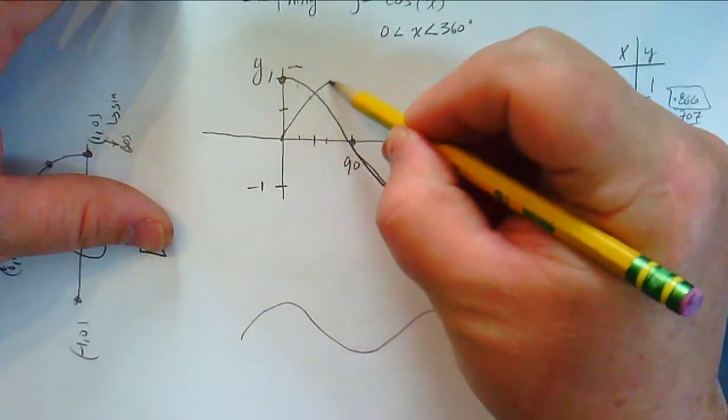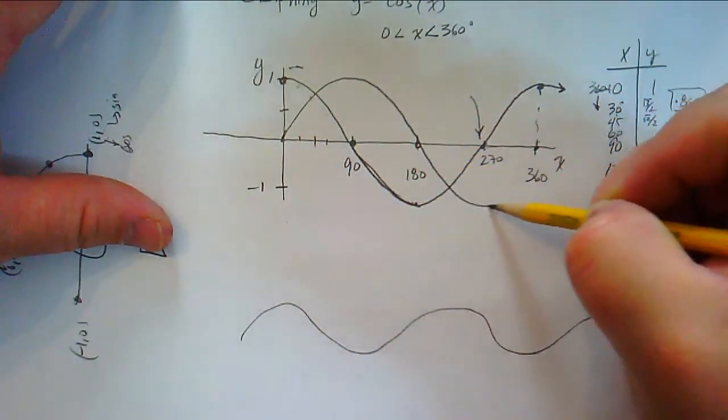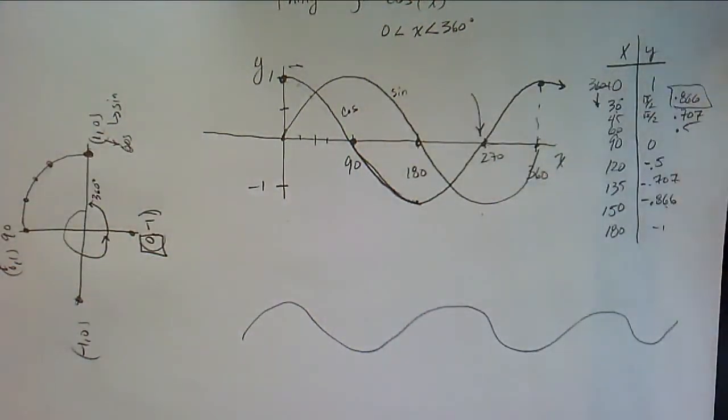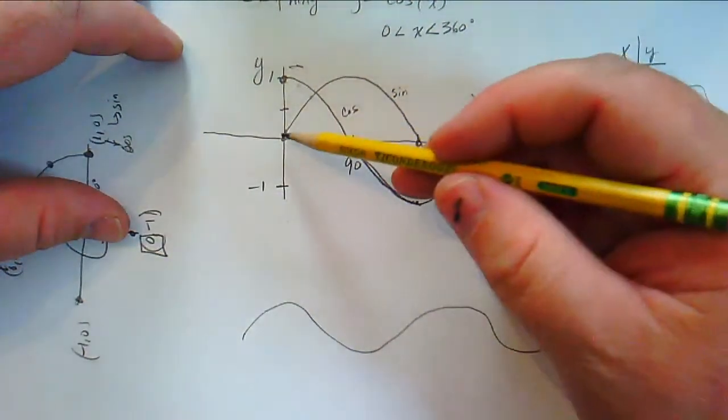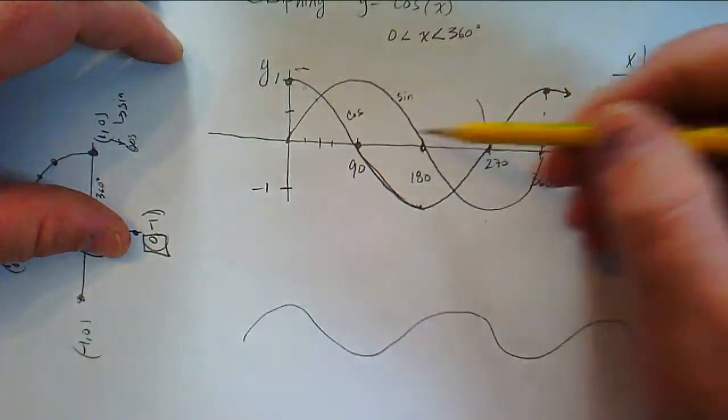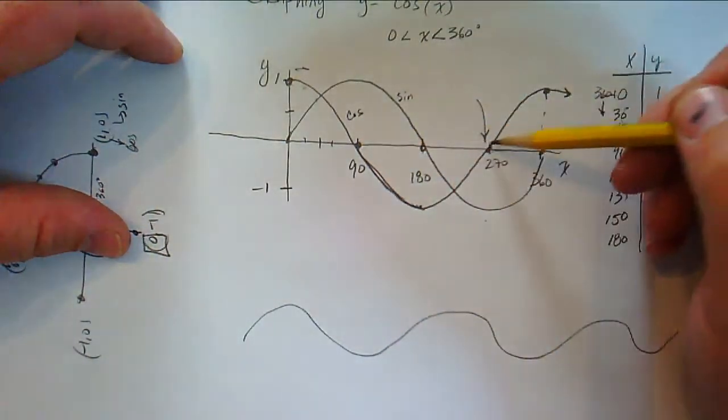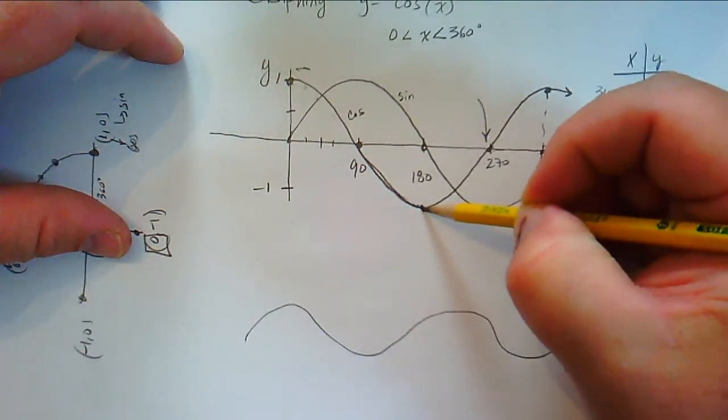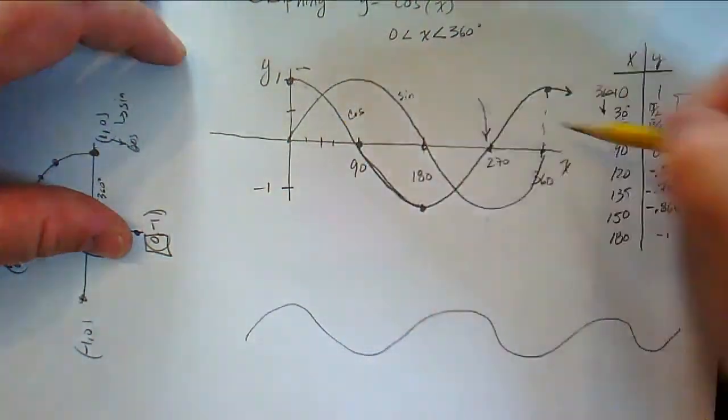So sine has, in one period, sine has three x-intercepts. So this one's sine, and this is cosine. Cosine has two. Sine has x-intercepts at the beginning, the end, and the middle. And cosine has x-intercepts at the quarter marks, at one quarter and three quarters. It has a minimum output at the halfway mark, and maximums at the ends.